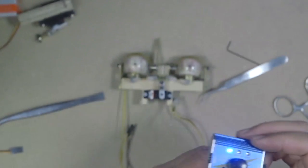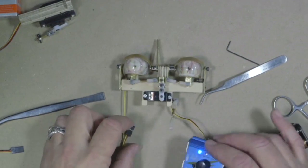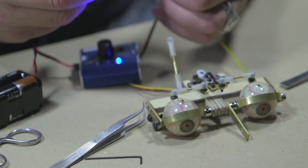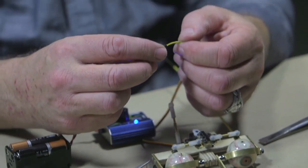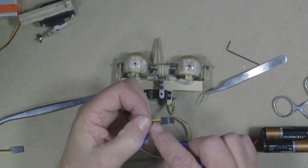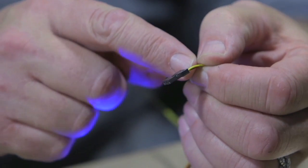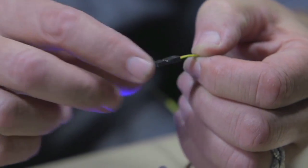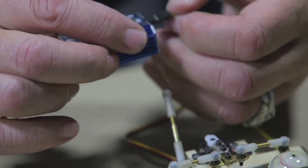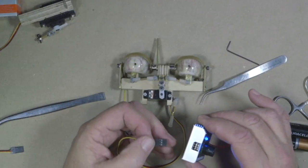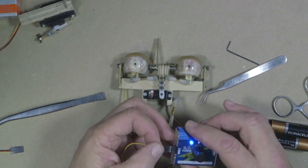On our servo wire, the yellow is the signal, the red is the positive, and the brown or the black depending on the type of servo is the negative. So all I have to do is plug that in here. There's actually room to put in three of these here but we'll just use one.